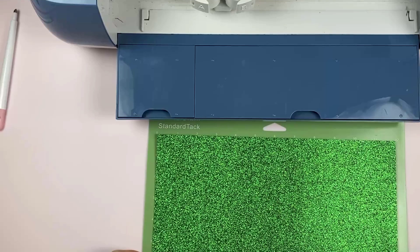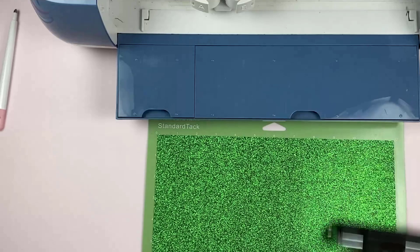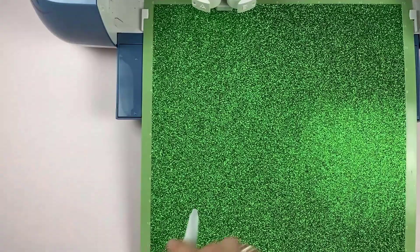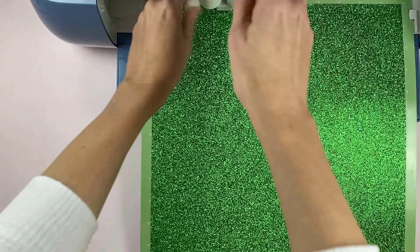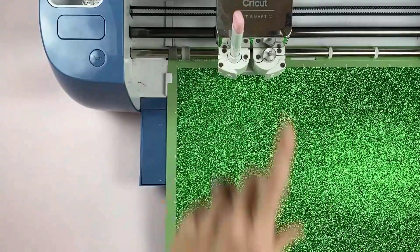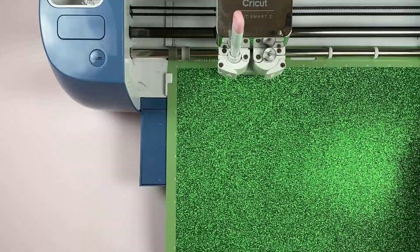The glitter cardstock I'm going to use my green standard grip mat. I'm going to put that on and I'm going to use my brayer to get it nice and adhering to the mat, and then don't forget we also are going to score part of it so I've attached my scoring tool there too.